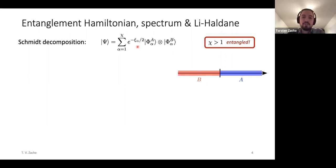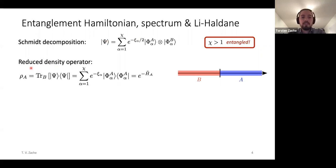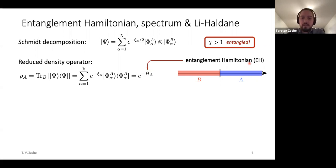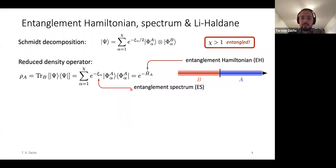The Schmidt coefficients can be given another reinterpretation if we rewrite them in terms of the reduced density operator, obtained by tracing out the degrees of freedom in B. This reduced density operator, being a positive semi-definite Hermitian operator, can always be written as an exponential, which defines the entanglement Hamiltonian. Of course, this is not a priori a physical Hamiltonian — there's no reason for it to be local, and it doesn't have the units of energy. But as we will see, it very often shares many physical properties with physical Hamiltonians. Therefore, it makes sense to interpret these coefficients as the spectrum of the Hamiltonian — the entanglement spectrum.